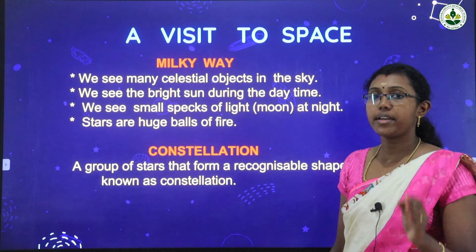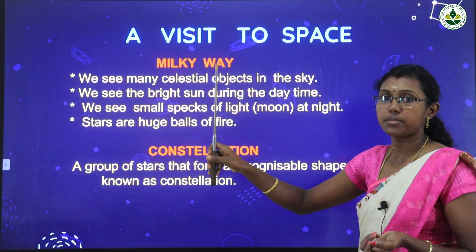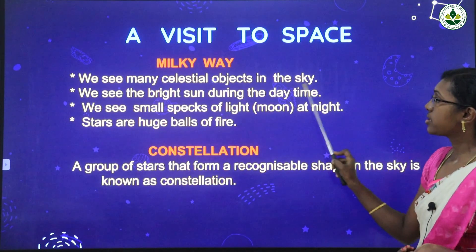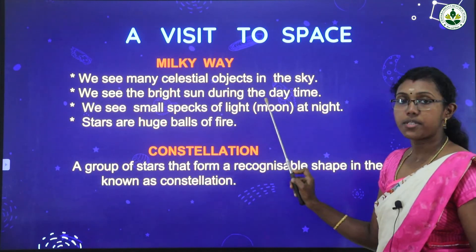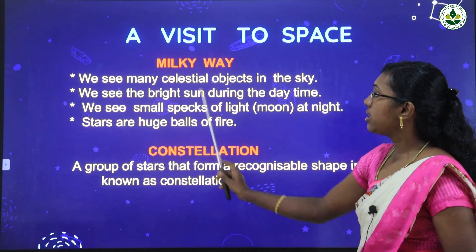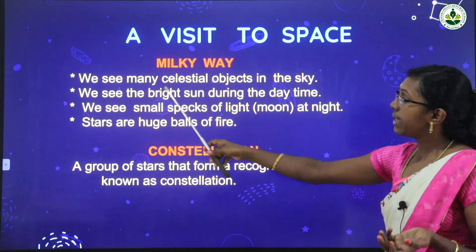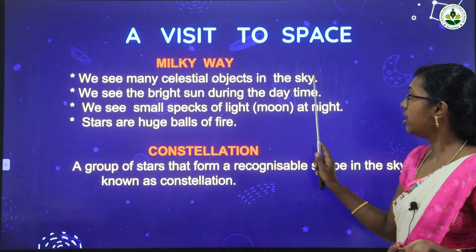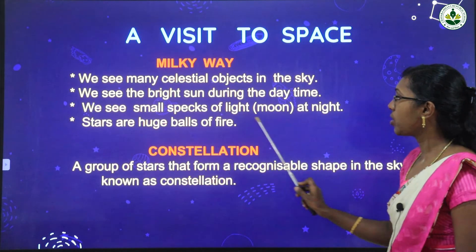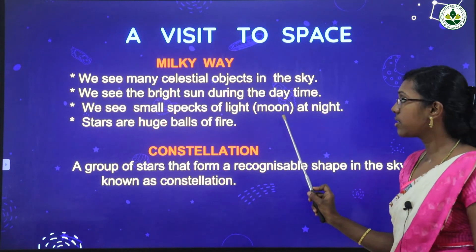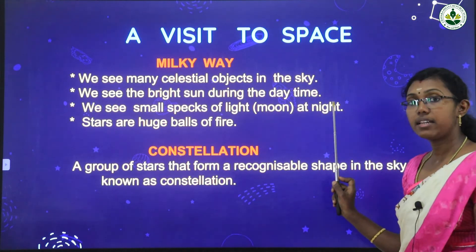Milky Way means all the solar planets, the sun, even Earth — everything is included in the Milky Way. It's a common name for all of that. We see many celestial objects in the sky — planets, stars, and the sun. We see the bright sun during the daytime, and at night we see small specks of light — the moon and small stars — which give us light.